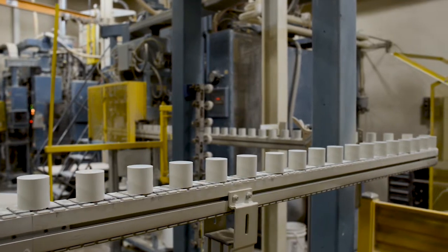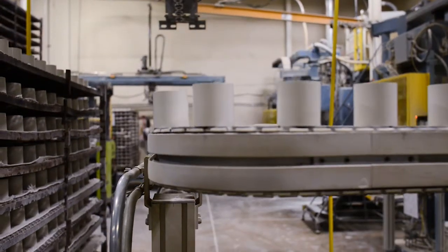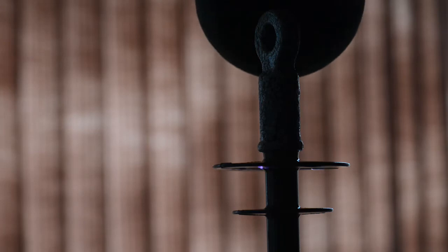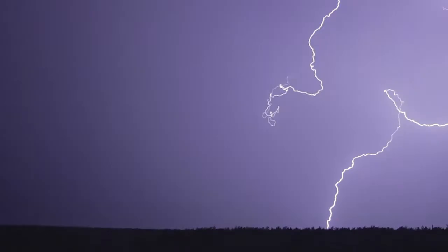A varistor can instantly change its resistance to voltage from high resistance during everyday operation to low resistance if a lightning strike threatens nearby.